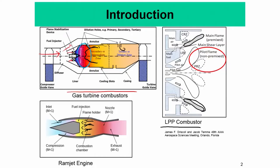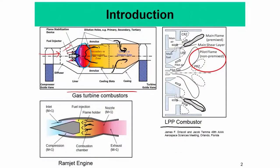Even the TAPS combustor has main premix flame branches on the two sides but also a pilot flame which is essentially a non-premix flame. So non-premix flame is present even in very modern gas turbine combustors. Non-premix flames have the disadvantage that you cannot easily control the temperature — it is always essentially the stoichiometric adiabatic flame temperature — and as a result all pollutants such as soot and NOx are formed. However, non-premix flames are much more robust than premix flames because there is no velocity scale like a flame speed.